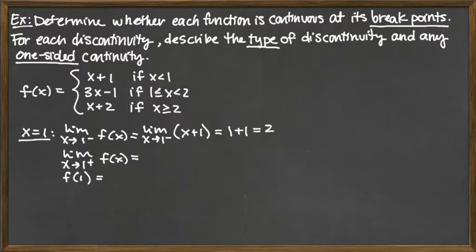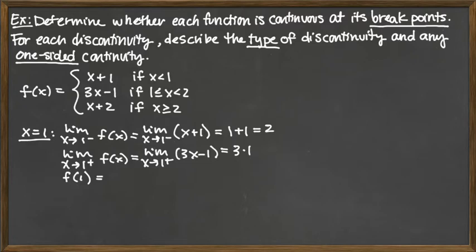For the right-hand limit, we look at x values slightly bigger than 1, which falls in the middle piece. So the limit as x approaches 1 from the right of 3x minus 1 — plugging in gives 3 times 1 minus 1, which equals 2. So both one-sided limits are matching at 2.